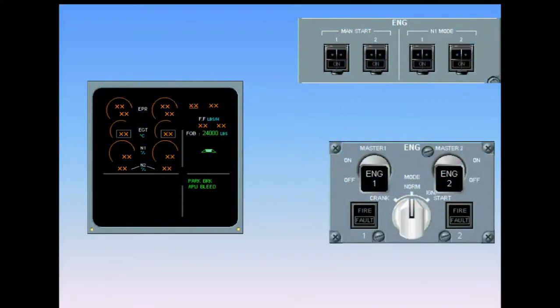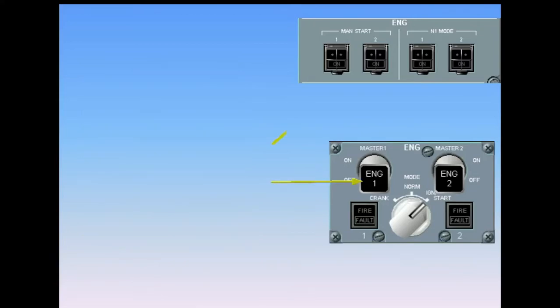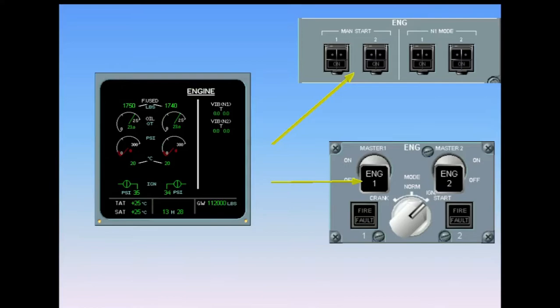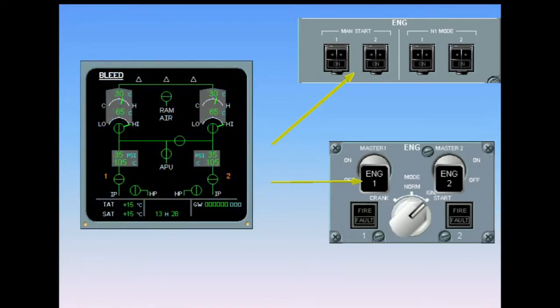Before proceeding, a review of the functions of the mode selector switch on the engine master panel is useful. When the switch is moved to the ignition start position, four things happen: one, the full authority digital engine controls are repowered; FADECs are powered for five minutes then go to sleep; two, the engine master levers and the manual start switches are armed; three, the engine system page automatically appears on the lower ECAM; four, the air conditioning flow control valves automatically close.